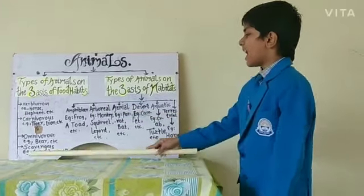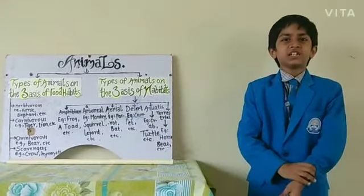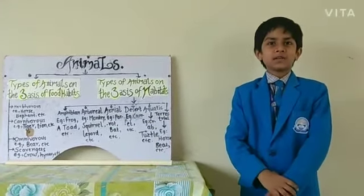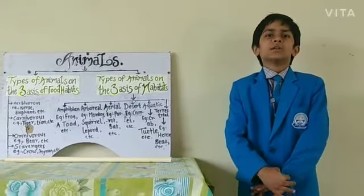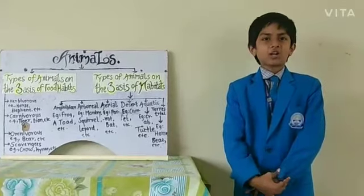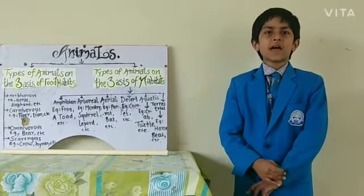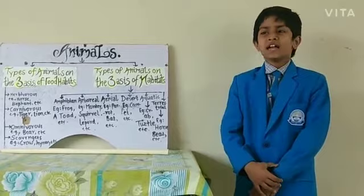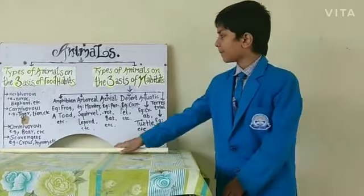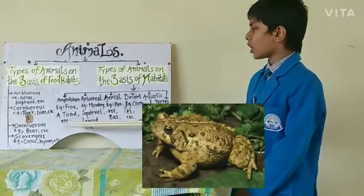First, amphibious animals. Animals that live on both land and water are called amphibian animals. For example, frog and tortoise.